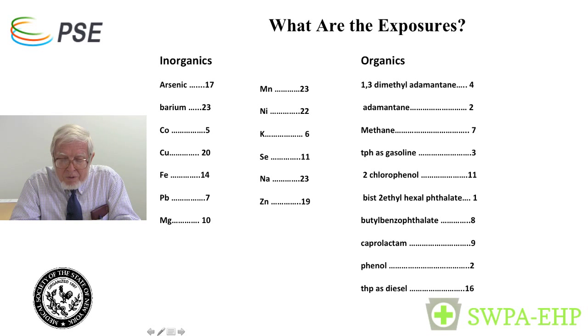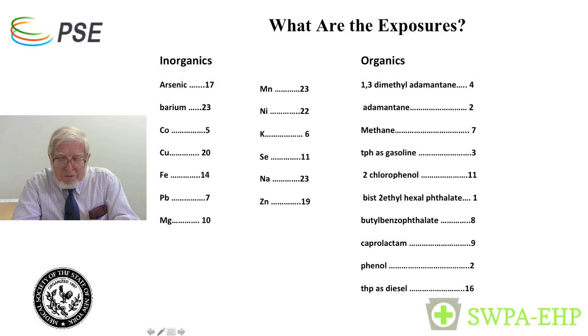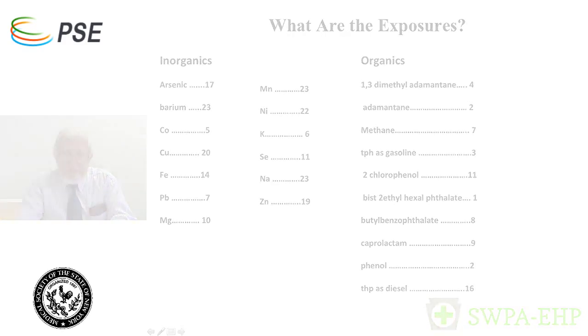In terms of organics present, there was 1,3-dimethyl adamantane, methane, total petroleum hydrocarbons (gasoline class), chlorophenol at high levels, bis-2-ethylhexyl phthalate, butylbenzyl phthalate — we know a little about phthalate toxicology but not much about the butylbenzyl form. There was also caprolactam, phenol, and total petroleum hydrocarbons in the diesel class. That's a mess of compounds. If you're worried about compounds interacting with each other, you've got enough compounds that will do exactly that.